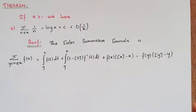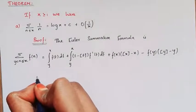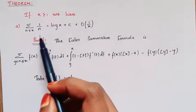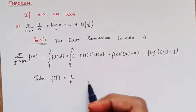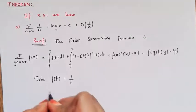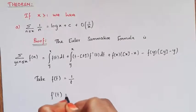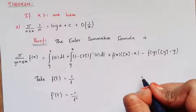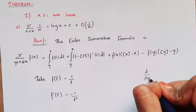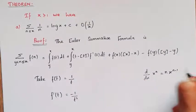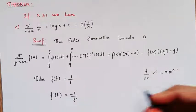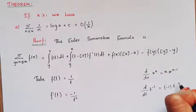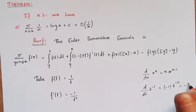To prove the first part, I am taking f(t) equal to 1 by t. Since the given function is 1 by n, I am taking f(t) equal to 1 by t. Since we want the first derivative, I find f'(t) equal to minus 1 by t squared. Using the differentiation formula d/dx of x^n equals n times x^(n-1): our function is 1 by t, that is t^(-1), so d/dt of t^(-1) equals minus 1 times t^(-2), which equals minus 1 by t squared.